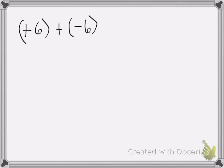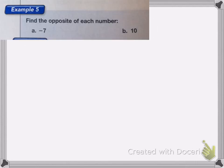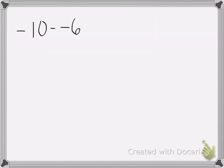Here I have positive 6 plus a negative 6. Again, these are opposites, and it's exactly the same just with parentheses around it, so my answer has to be 0. Now I want to find the opposite of each number — the opposite of negative 7 is the opposite side of the number line, so that would be positive 7. And the opposite of 10 would be negative 10. So opposites allow us to change any subtraction problem into an addition problem, which is what algebraic addition is.